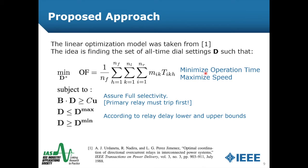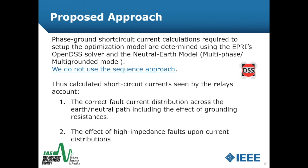Minimizing this objective function will maximize speed, and this will be subjected to the selectivity criteria and the reliability bounds defined by lower and upper limits. In our study, we used the OpenDSS solver and the Neutral Earth model to achieve two main contributions: including the effect of grounding resistance in the earth or neutral path, and assessing the effect of high-impedance faults on the current distribution in the optimization solution.